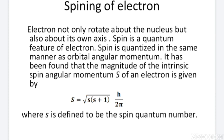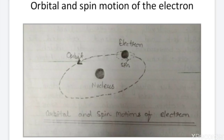This concept of spin is a quantum feature of the electron. The spin of the electron is quantized in the same manner as the orbital angular momentum of the electron. We can write the magnitude of the spin angular momentum S of an electron as: capital S equals root of s(s+1) times h upon 2π, where small s is defined as the spin quantum number. In this diagram, we can show the orbital motion as well as the spin motion of the electron.